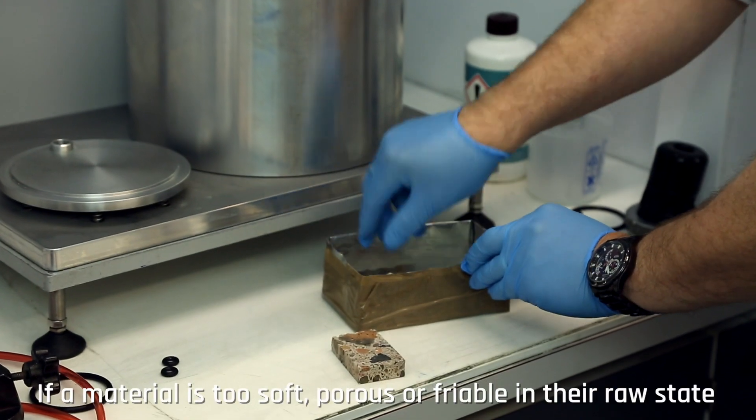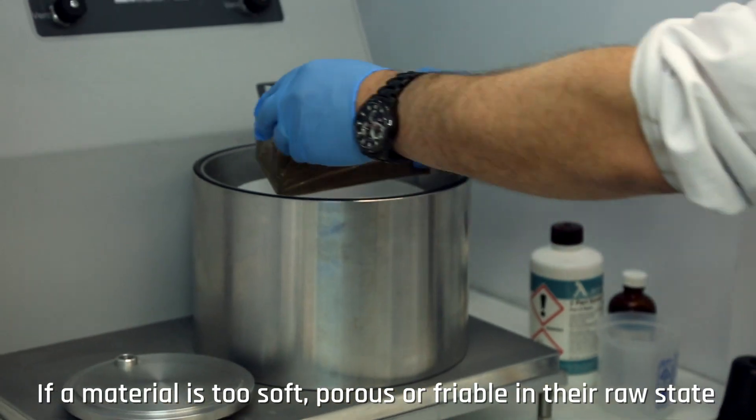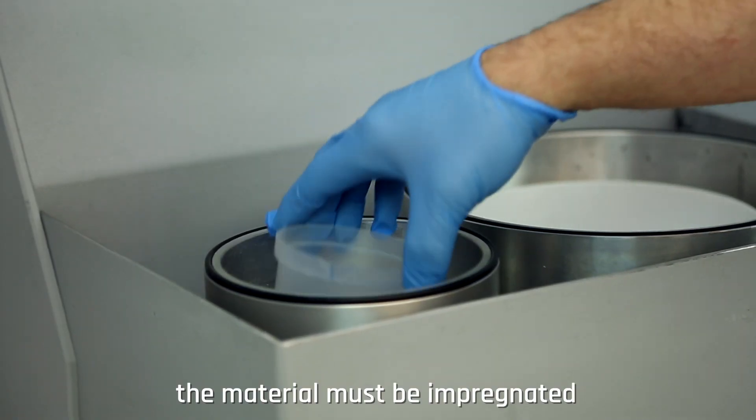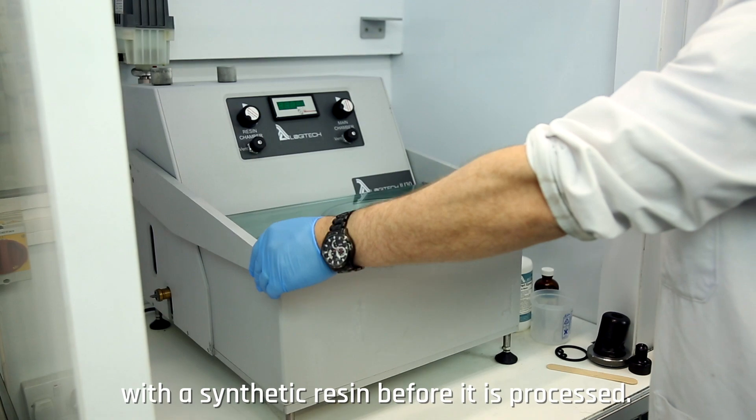If a material is too soft, porous or friable in their raw state, the material must be impregnated with a synthetic resin before it is processed.